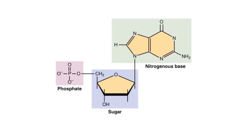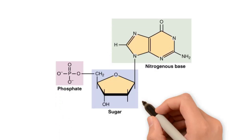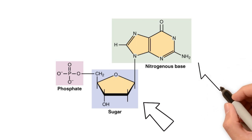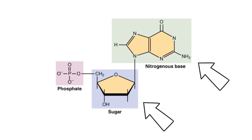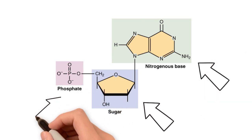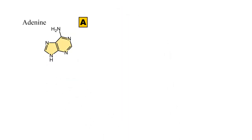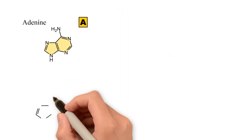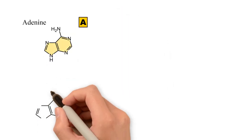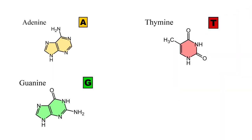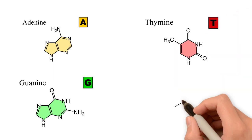The composition of a nucleotide is given by a 5-carbon sugar molecule, a nitrogenous base, and one phosphate group. There are four types of nucleotides – adenine, guanine, thymine, and cytosine.